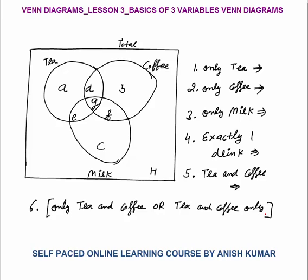Now the 3 variables are tea, coffee and milk. A survey was conducted by some organization about people's choices of drink — either they like tea, or coffee, or milk, or 2 or 3 of them. The total number of respondents will be represented within the rectangle.